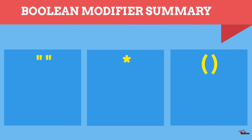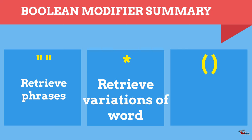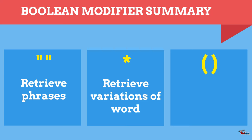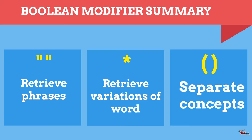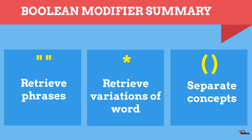In summary: quotation marks are a way to tell the search engine to retrieve exact phrases; asterisks are a way to tell the search engine to retrieve multiple variations of a word; and brackets are a way to communicate to the database which terms and operators belong together.